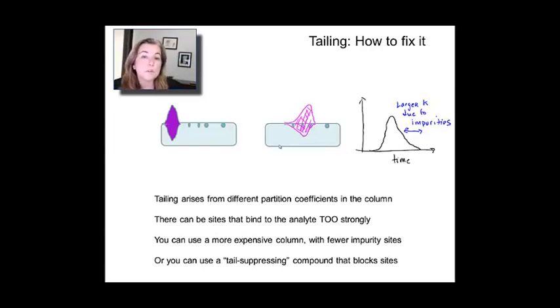Or another cheaper thing to do because often you pay a lot for those columns is to use a tail suppressant. So, for example, a lot of amines can be used in small concentrations. And they effectively go and they hang onto those defect sites and they block them for the analyte coming over. So, that's another strategy that you can use.